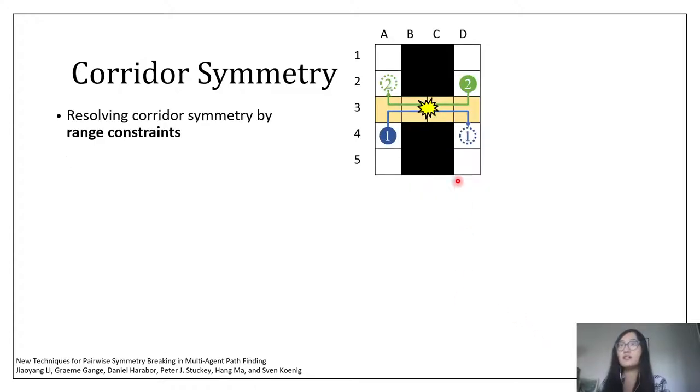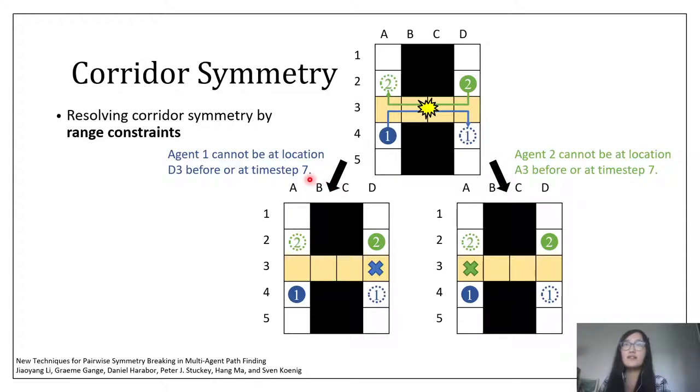Therefore, to resolve all collisions between these two agents, we say that actually one of the agents has to use the corridor after the other agent. For example, if we let agent 2 use this corridor first, then agent 1 can enter this corridor only after agent 2 left the corridor. Therefore, the earliest time step for agent 1 to travel through the corridor and reach location D3 is time step 8. And same for agent 2. Therefore, we can branch this node by saying either agent 1 cannot be at location D3 at or before time step 7, or agent 2 cannot be at location A3 at or before time step 7. In each case, when we replan the paths, we can find collision-free paths immediately. Also, we can prove in theory that this pair of constraints preserve the optimality of CBS. We call these constraints range constraints.